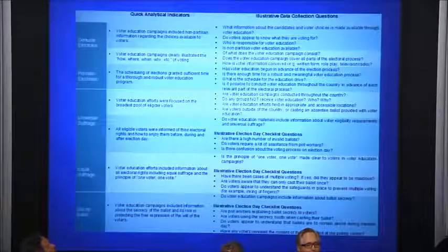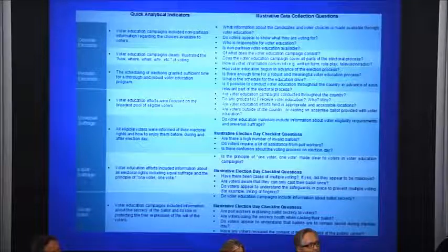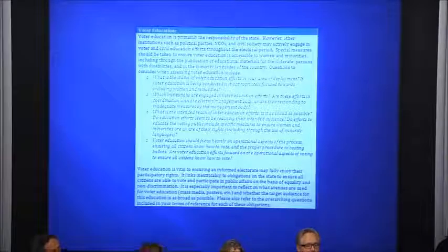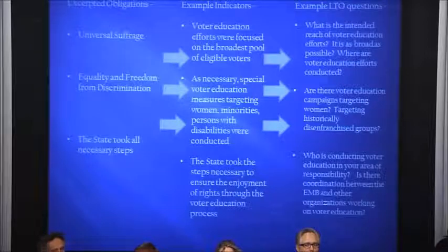This table provides an overview of where we're going with our quick indicators and data collection questions. On the left you see the overall obligations; then we've developed indicators that our teams can use to analyze data coming in from the observation teams; and then data collection questions that guide our observers in the field. This is an example of the templates we use for long-term observers — questions drawn directly from the illustrative-questions column and included in the templates, so observers are guided by obligations when conducting interviews.